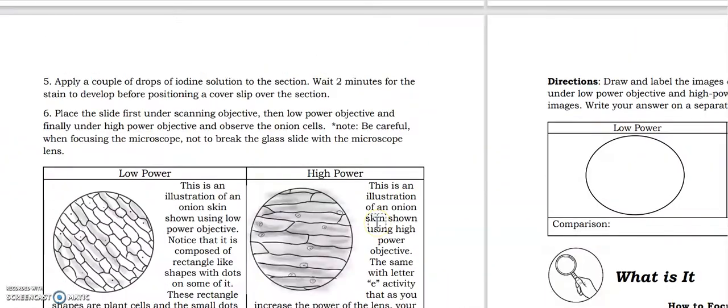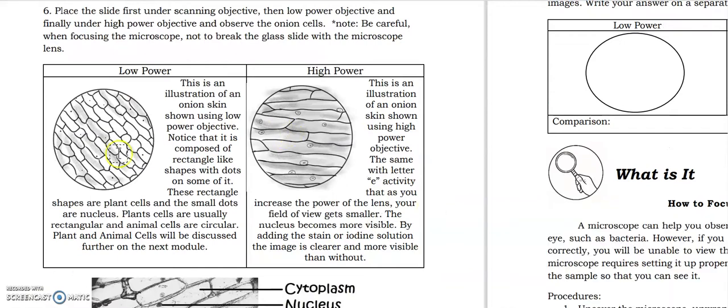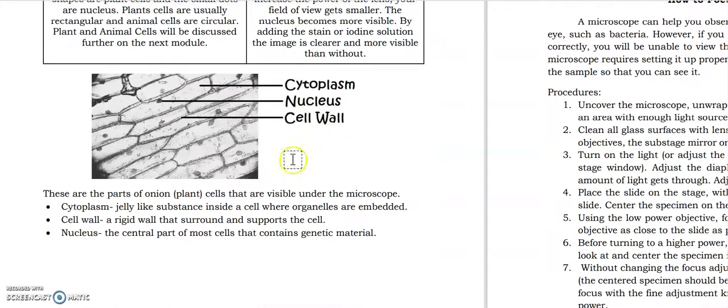And without much further ado, let's now proceed. All right, so using the low power objective, this is the view of the onion cell, and using the high power objective, this is it. And yeah, we have the cytoplasm, the nucleus, and the cell wall.